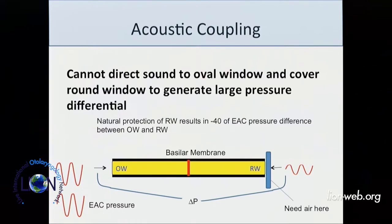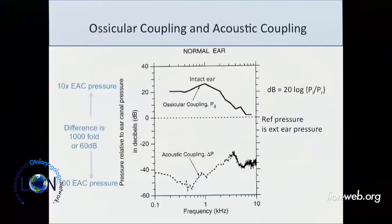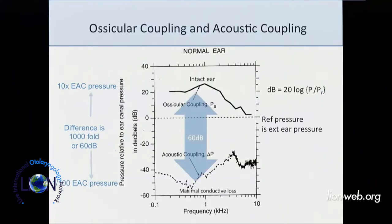You also need air in the middle ear, otherwise the round window can't move. With the intact ear, we go up by 20 dB at the oval window and drop about 5–10 dB at the round window — that's what normally drives the inner ear. If you take the ossicles away, the pressure difference between the round and oval windows is only about minus 40 dB compared to the external ear canal. With complete loss of the middle ear, we end up with about a 60 dB conductive hearing loss.